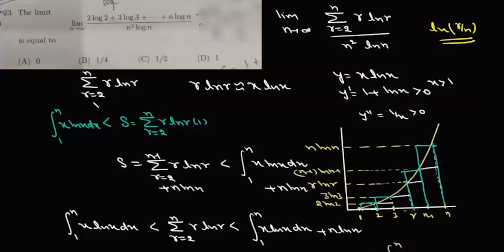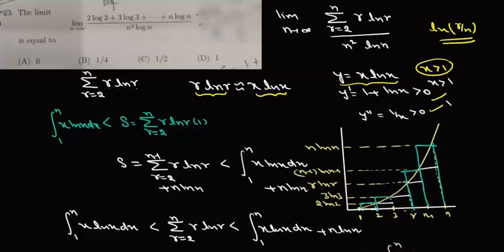We have this summation r varies from 2 to n of r·logr, and what we will try to do is change it into an integration of x·logx. The function comparable to r·logr is x·logx. If we look at this function y = x·logx when x > 1, its derivative is (1 + logx) which is greater than 0, and its second derivative is 1/x which is also greater than 0. So it is an increasing and concave up function.